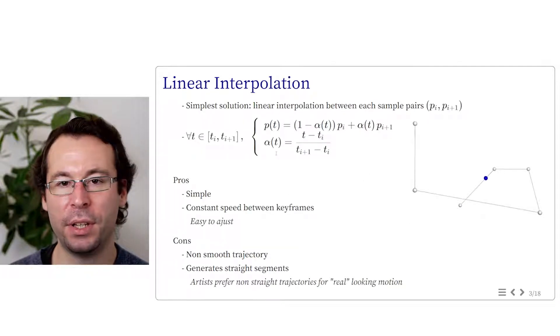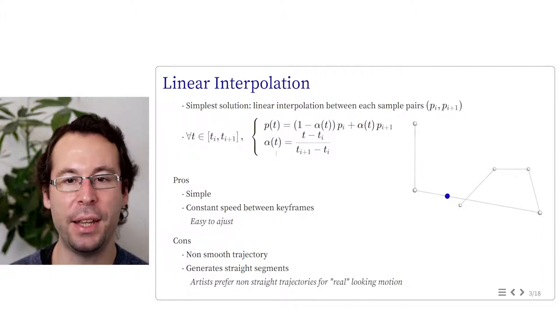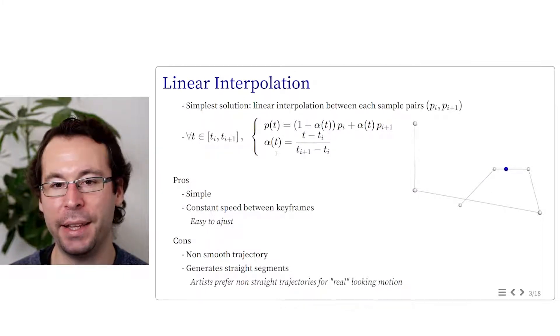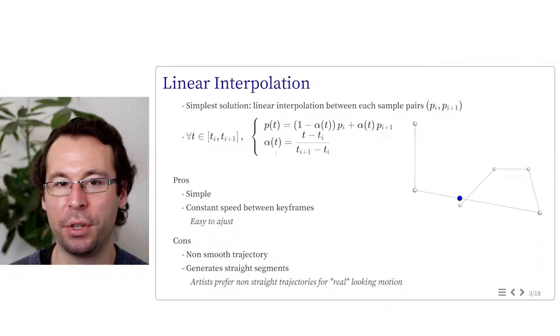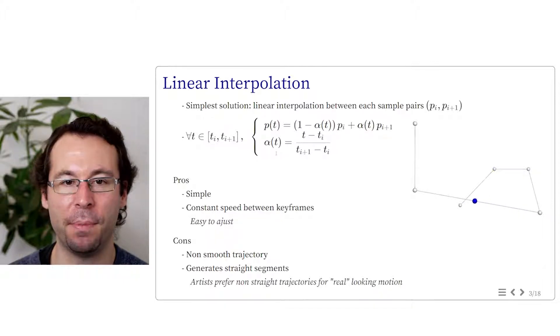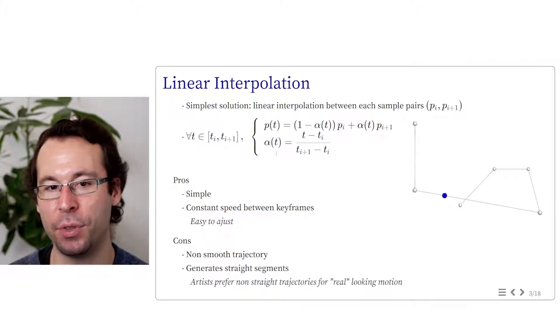There is actually a simple solution, it's the linear interpolation. In this case, we linearly interpolate between each sample pairs, pi and pi plus 1. We have the explicit formulation stating that p at time t equals 1 minus alpha pi plus alpha pi plus 1, where alpha varies linearly between 0 to 1 when t varies between ti and ti plus 1.